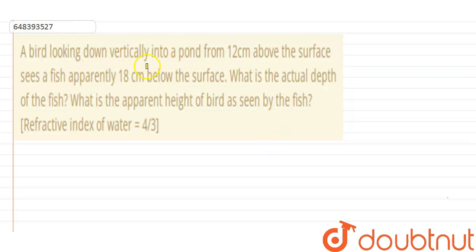Hello everyone, the question is: a bird looking down vertically into a pond from 12 centimeters above the surface sees a fish apparently 18 centimeters below the surface. What is the actual depth of the fish and what is the apparent height of the bird seen by the fish? The refractive index is 4/3.